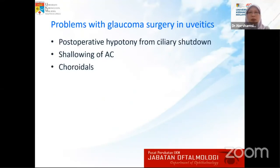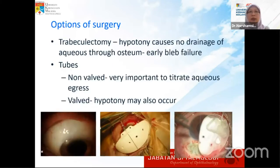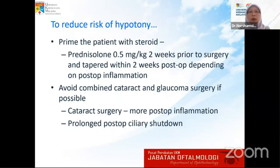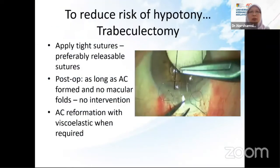The main problem with glaucoma surgery in uveitis is post-operative hypotony from ciliary shutdown, causing shallowing of the anterior chamber and choroidal formation. Options include trabeculectomy in eyes that are quiet, or tubes — either valved or non-valved. To reduce the risk of hypotony post-operatively, patients must be primed properly — normally with prednisolone 0.5 mg/kg for two weeks prior to surgery, tapered within two weeks post-operatively. We avoid combined cataract and glaucoma surgery if ever possible, and tight releasable sutures are preferred for trabeculectomy.